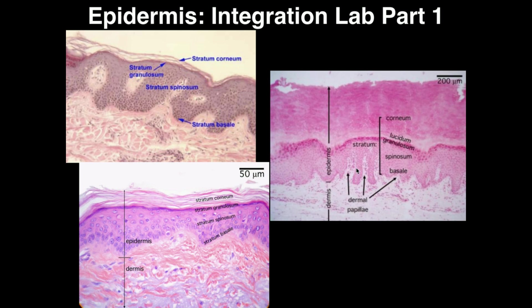One more thing to mention: the ridges that go into the stratum spinosum and kind of go up and down are called dermal papillae. Dermal papillae are partly responsible for your fingerprints — everybody has different fingerprints because their patterns of dermal papillae are different. You can see dermal papillae in the top image. Hopefully this gave you a clear understanding of the epidermis and its layers. Make sure you can identify these layers for your practical, and I will see you in class.